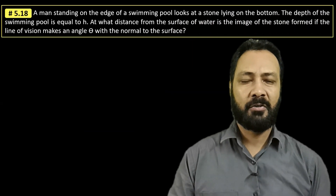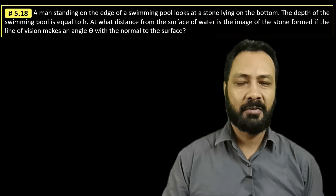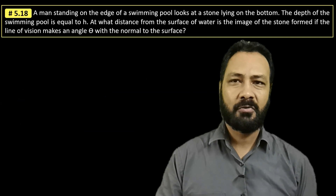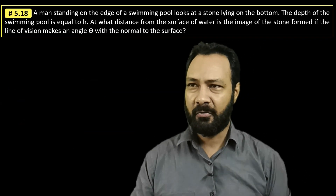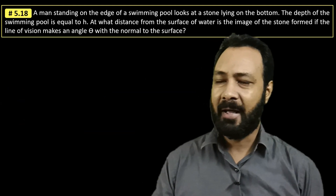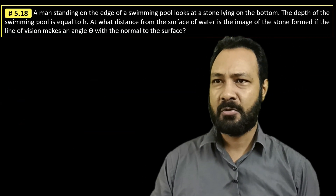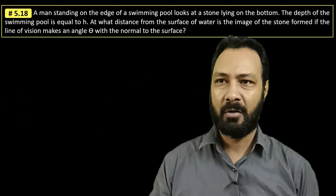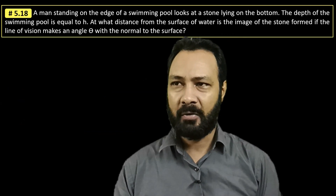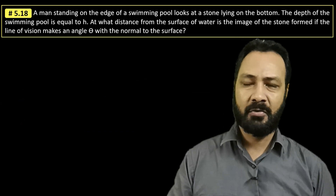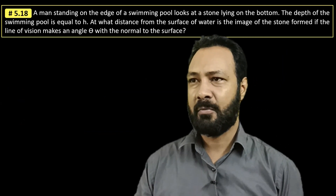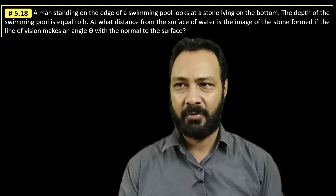Hello dear friends, welcome to the Quantum Guru. Let's see this very challenging problem of geometrical optics from Irodov — question number 5.18. The question states: a man standing on the edge of a swimming pool looks at a stone lying on the bottom. The depth of the swimming pool is equal to h. At what distance from the surface of the water is the image of the stone formed if the line of vision makes an angle theta with the normal to the surface?